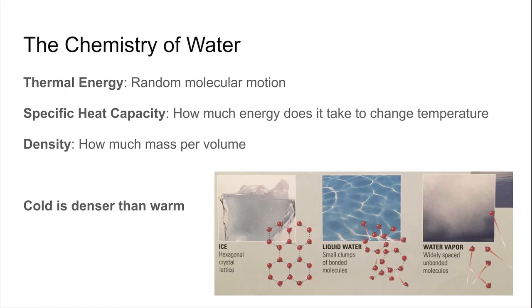Specific heat capacity is an important property in the context of earth science because it helps us to explain how water can moderate the climate. The key takeaway from this chemistry of water is that cold water is going to be denser than warm water, generally speaking.